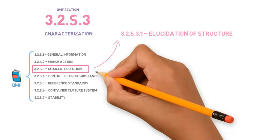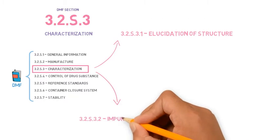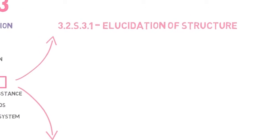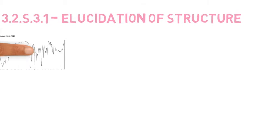First, the elucidation of structure, and then one of the most important parts of the DMF, the impurities chapter. In the elucidation of structure, the manufacturer will present results of analysis which confirm the identity and structure of that API,